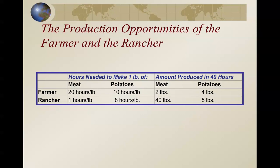In 40 hours — dividing 40 by the hours needed — the farmer produces 2 pounds of meat and 4 pounds of potatoes in 40 hours. The rancher produces 40 pounds of meat and 5 pounds of potatoes in 40 hours. You can see that the rancher is by far the most productive. Future slides are going to focus on the second part: the amount produced in 40 hours.